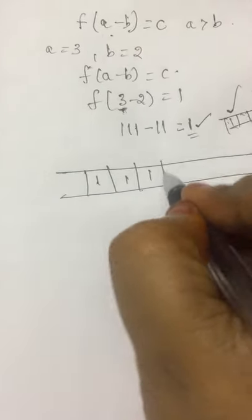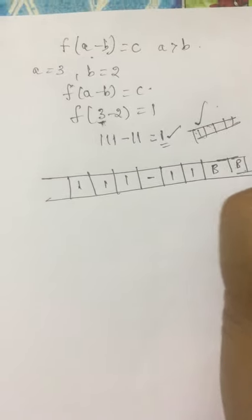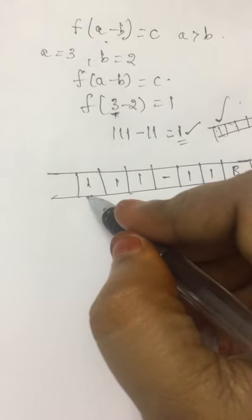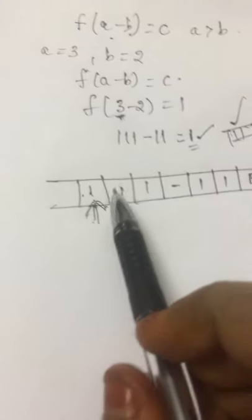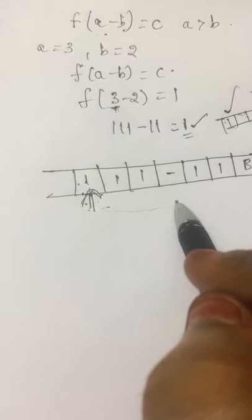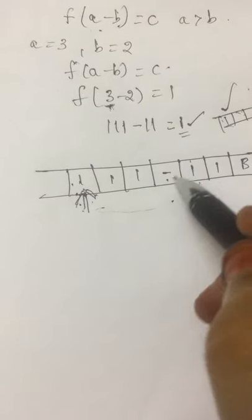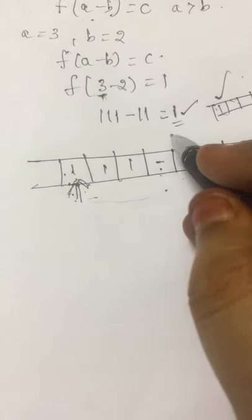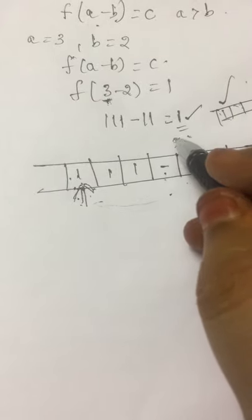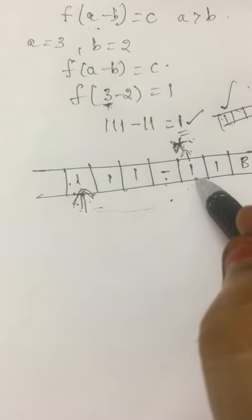Let us see how we are going to obtain it. The logic: 3 minus 2 followed by blank symbols is the input tape. The header will start from the first 1. It is not going to convert this 1 to any other symbol — it just moves to the right direction until the minus symbol. After the minus symbol, the 1 which is immediately to the right of the minus symbol will be converted to some other symbol — here I am taking star.